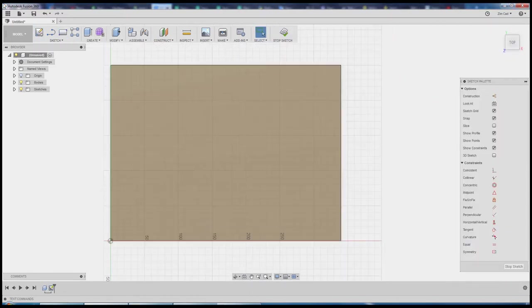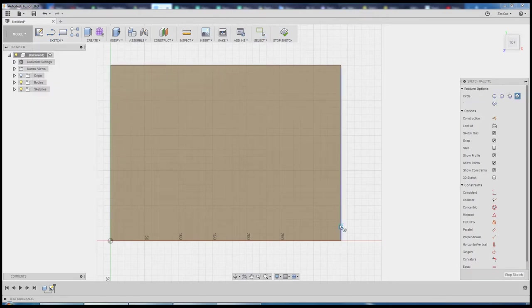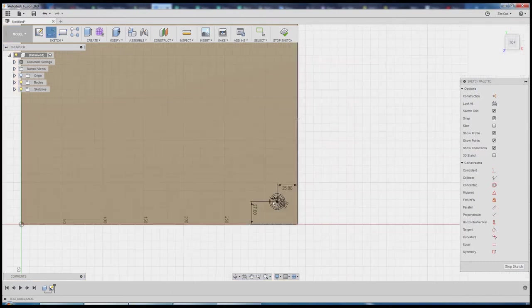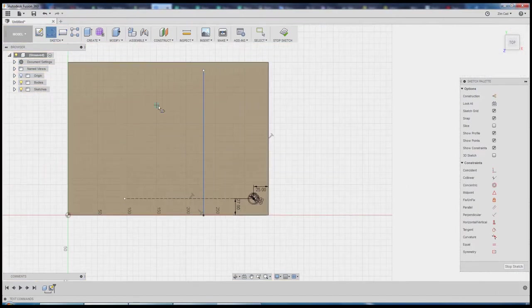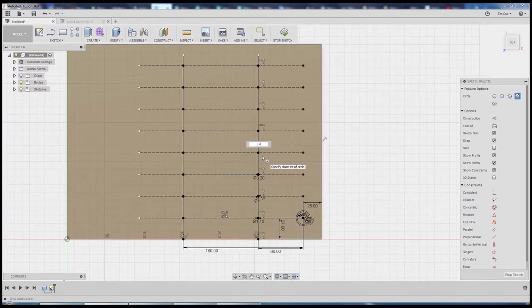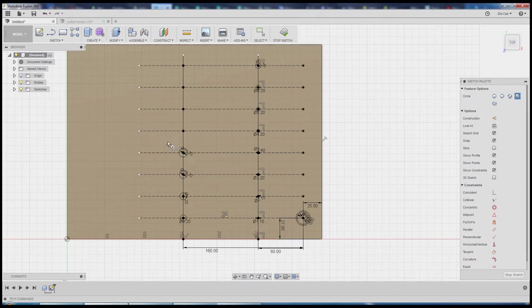On the top I started a sketch to lay out the holes for the collets and the corresponding bit sizes. If you'd like to know more about this process leave a comment below or check out the NYC CNC YouTube channel. They do a great job of explaining a lot about CNC milling and CAD modeling.